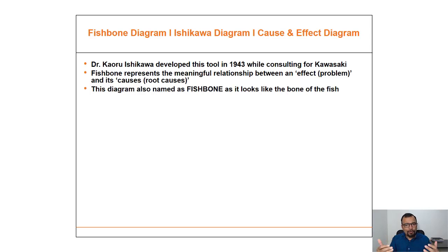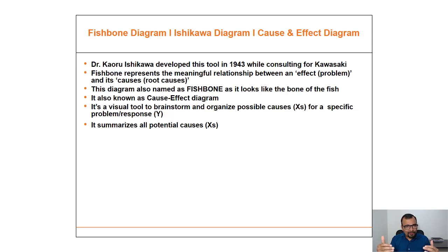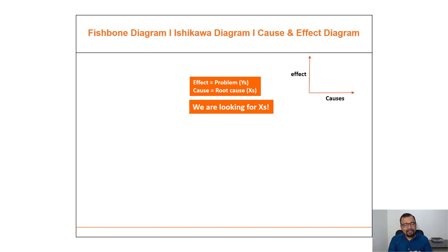This diagram is named 'fishbone' as it looks like the bone of a fish. It is also known as the cause and effect diagram. It is a visual tool to brainstorm and organize possible causes — that is, X — for a specific problem or response, that is Y. It summarizes all potential causes. In a 5-Why you may not be able to summarize all causes, but with the fishbone diagram you can. You need to start with Y and then drill down. On the X-axis there is the cause, and on the Y-axis we have the effect.